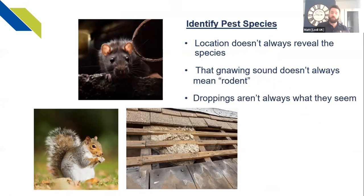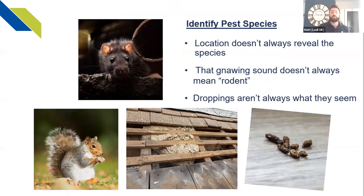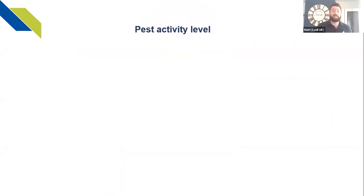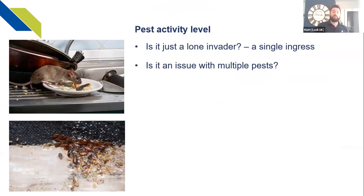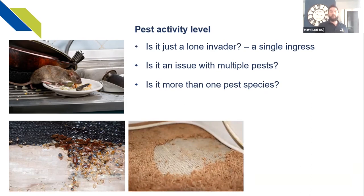Droppings as well — with trained eyes, we know what we're looking for on site in terms of droppings, but to the customer they're just droppings, so you need to be on site to establish exactly what's happening. Pest activity level identified by a survey — is it just a single problem, like a rat that passed an open kitchen door? Is there an issue with multiple pest species? Just because a customer's found a bed bug, it doesn't mean there isn't more of an issue harboring in that area. A survey will help you establish and identify the level of activity and whether there is more than one pest species.